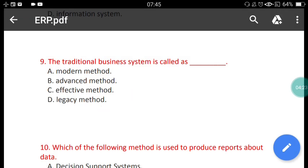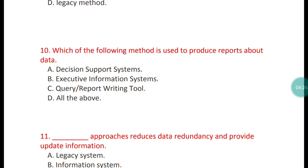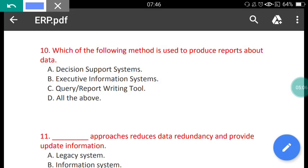Question 10: Which of the following methods is used to produce reports about data? The options are: decision support system, executive information system, and query or report writing tool. The correct answer is option D — all of the above. Decision support system, executive information system, and query or report writing tool are all used to produce reports about data.